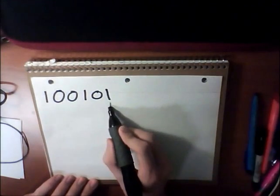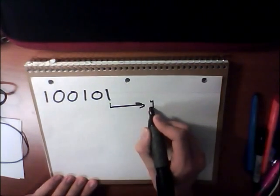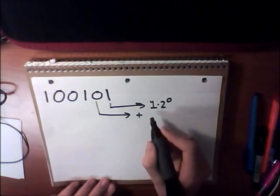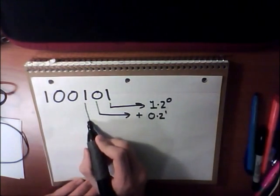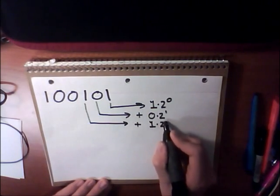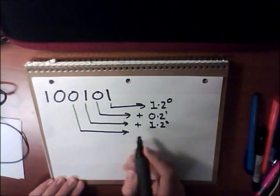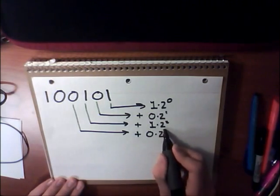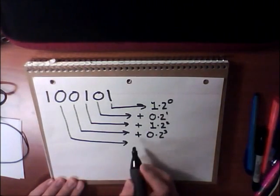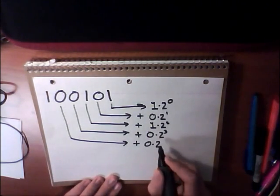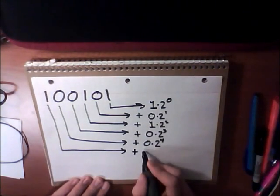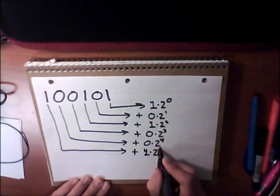Okay, well let's find out. Since 1 is the first digit, we know it's 1 times 2 to the 0th power, plus 0 times 2 to the 1st power, plus 1 times 2 to the 2nd power, plus 0 times 2 to the 3rd power, plus 0 times 2 to the 4th power, plus 1 times 2 to the 5th power.